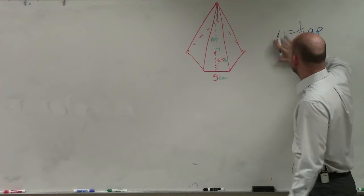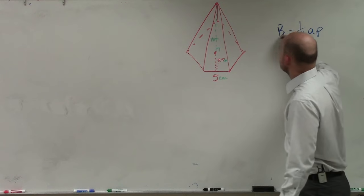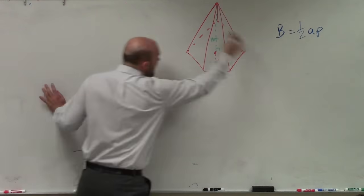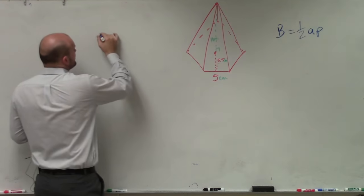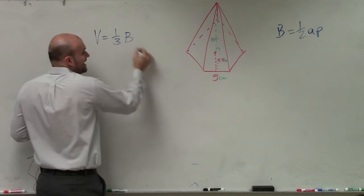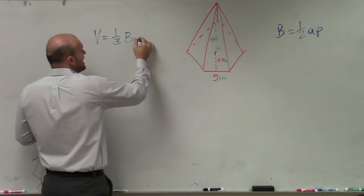Now, instead of calling it A, I'm going to call it big B, because that's exactly, remember, when we're dealing with the area of a pyramid, it doesn't matter what the base is. The volume of a pyramid is 1/3 big B, which is area of our base, times our height.